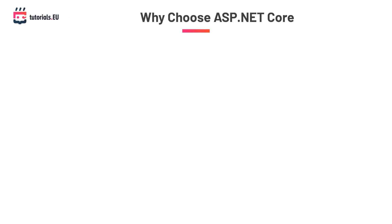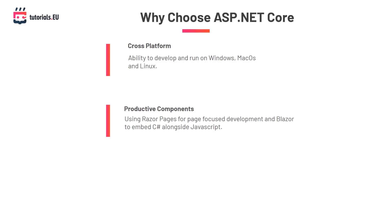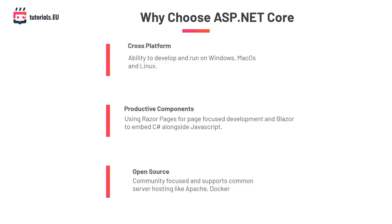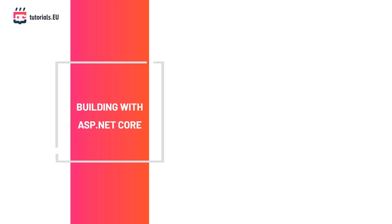Why should you choose to learn ASP.NET Core instead of any other framework? The strengths of ASP.NET Core lie in its ability to develop and run applications across multiple platforms, making it more productive and less time consuming. Components like Razor pages render reusable components that make development easier and faster. Being open source means it's easier to learn from community contributed content. There's also continuous evolution and support of commonly used tools, backed by Microsoft.